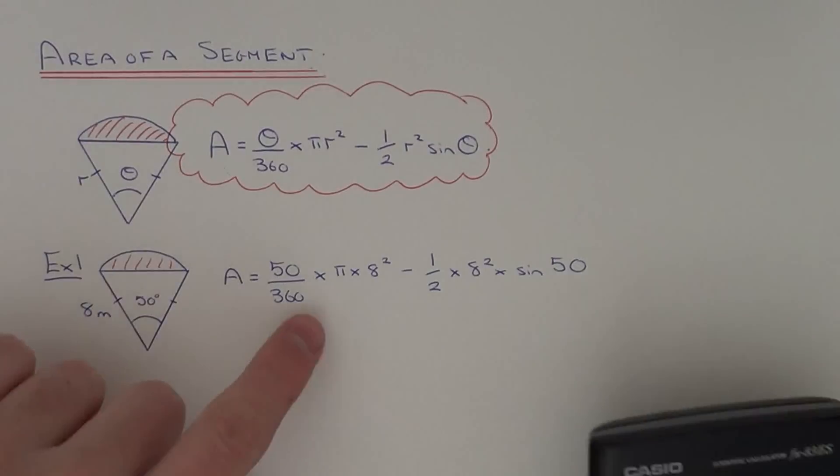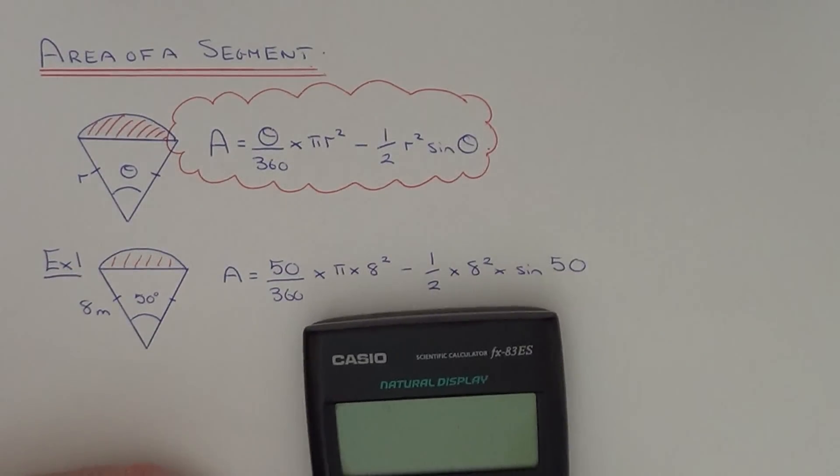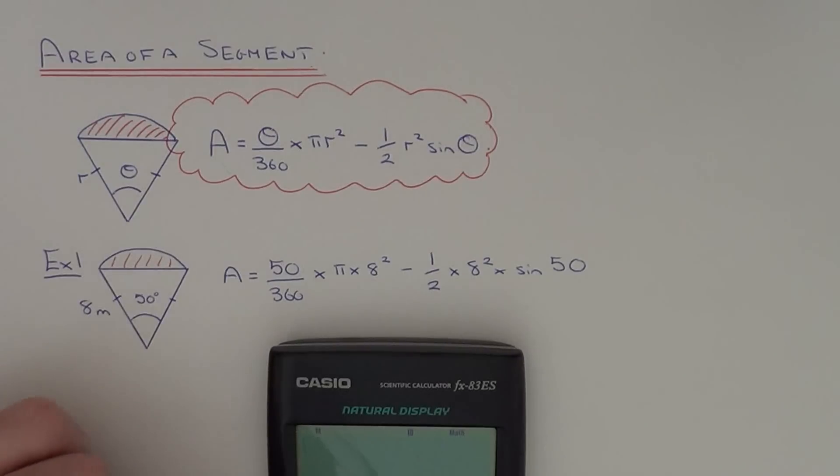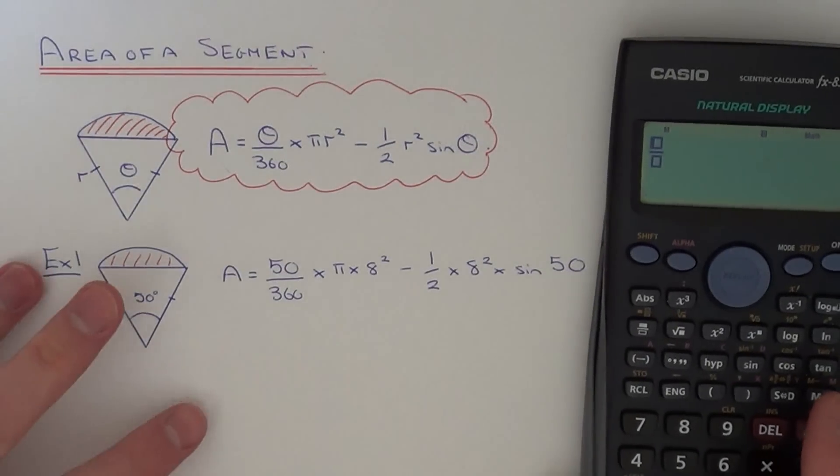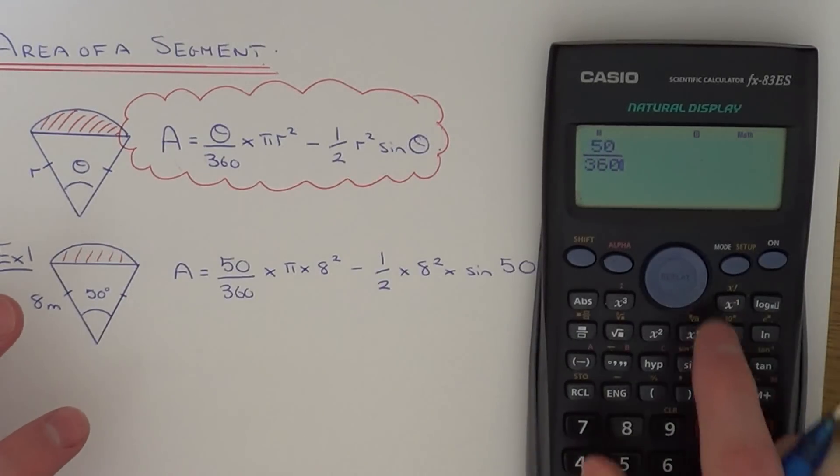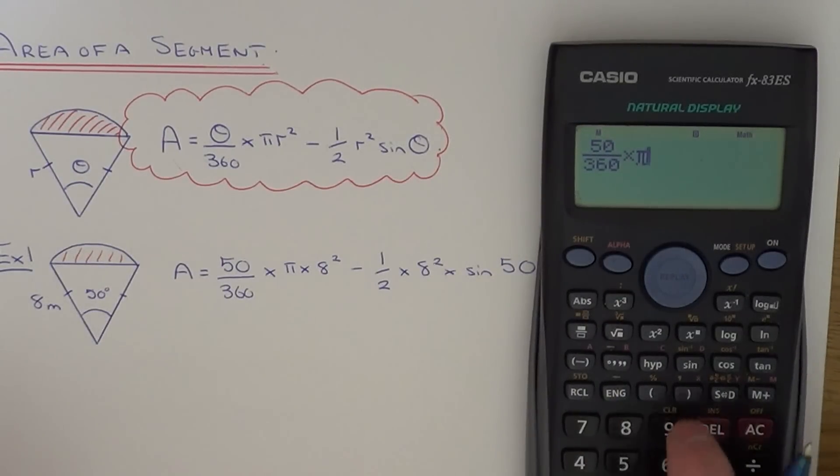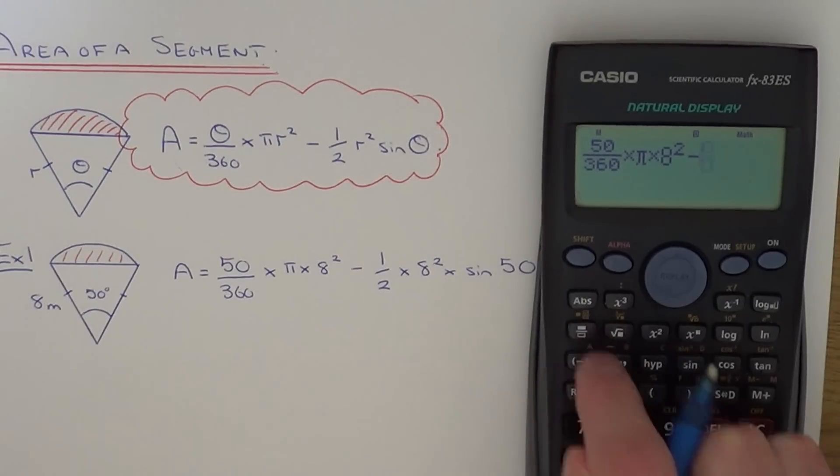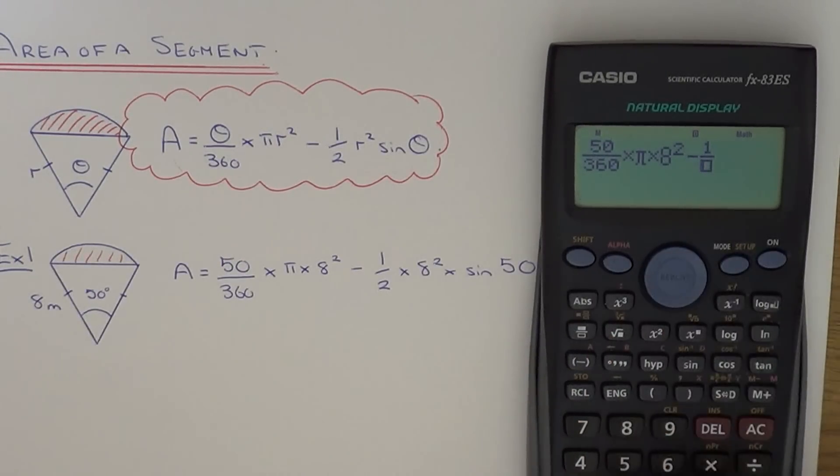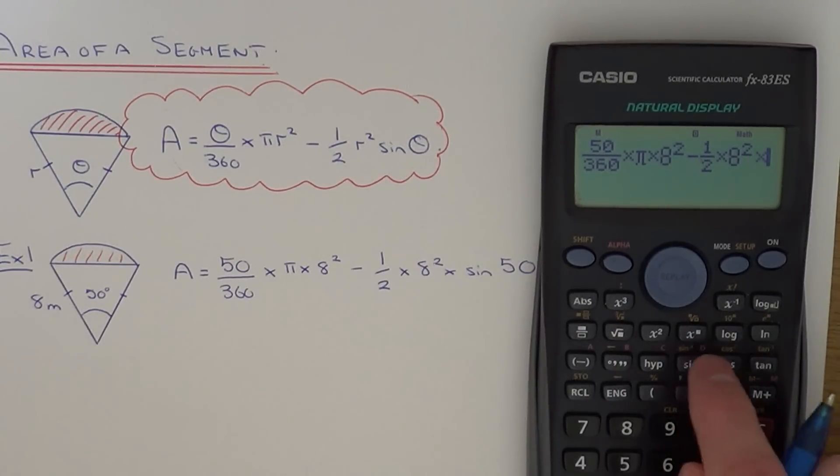So you should be able to type all this on your calculator. So we've got 50 over 360 times pi times 8 squared minus 1 half times 8 squared times sin 50.